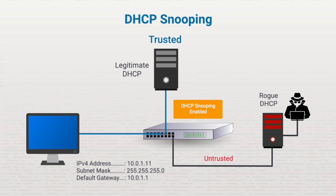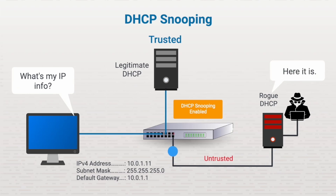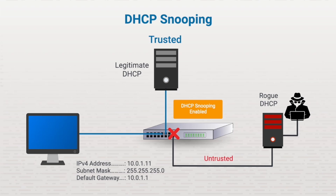Know that the configuration process will vary by manufacturer. Once configured, the DHCP snooping process detects, blocks, and drops DHCP packets when the DHCP information comes from an untrusted source. This information is also logged so further actions can be taken to locate and eradicate the rogue DHCP server.